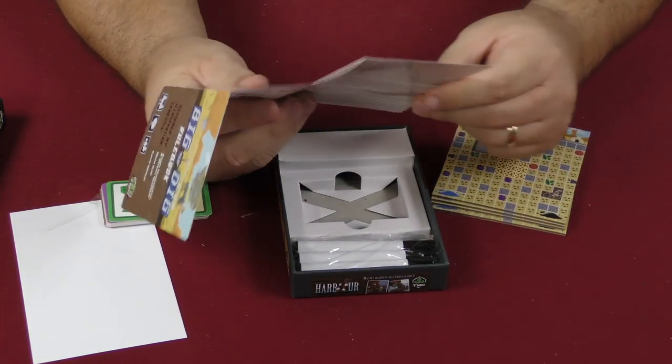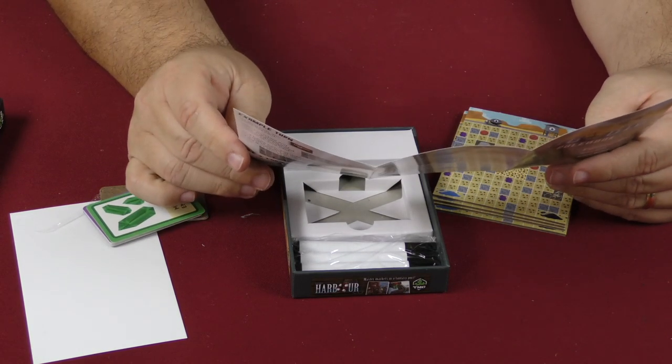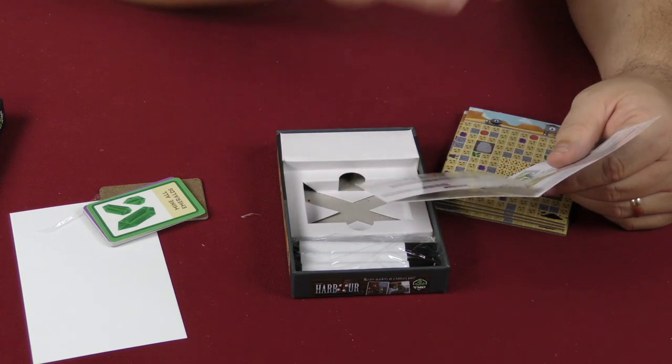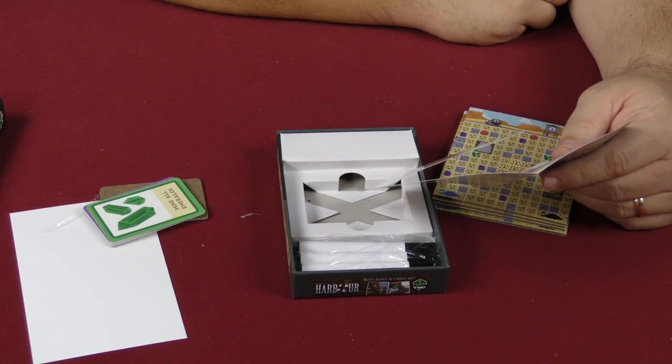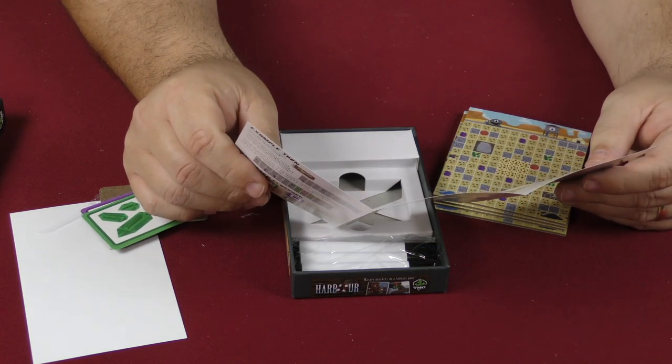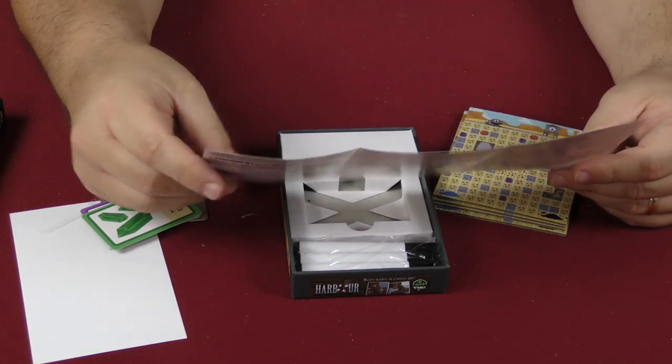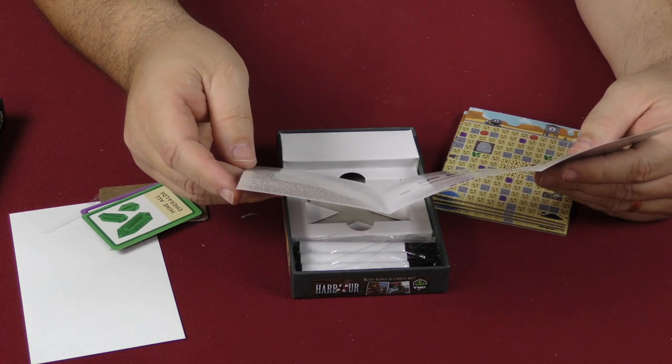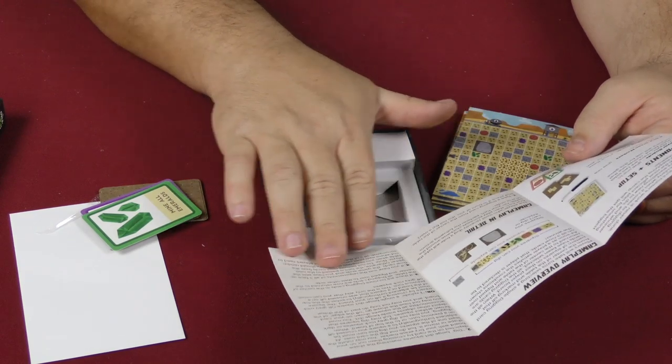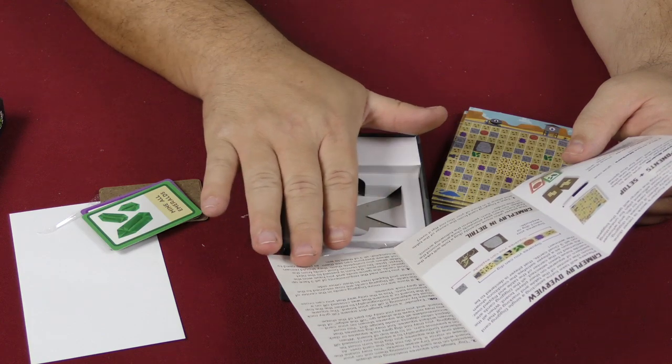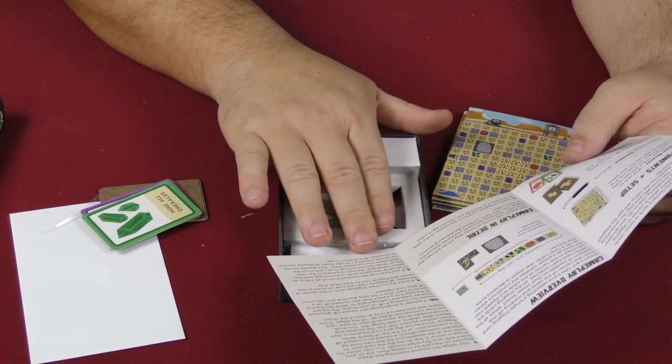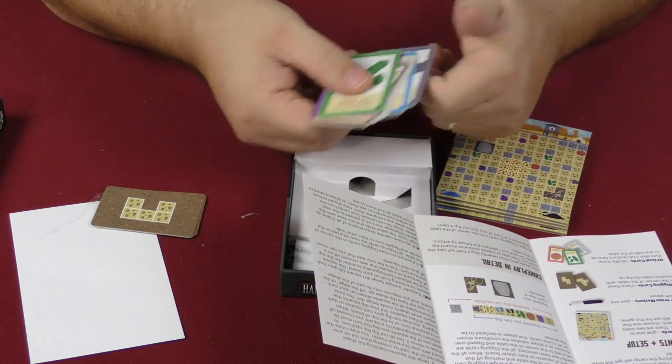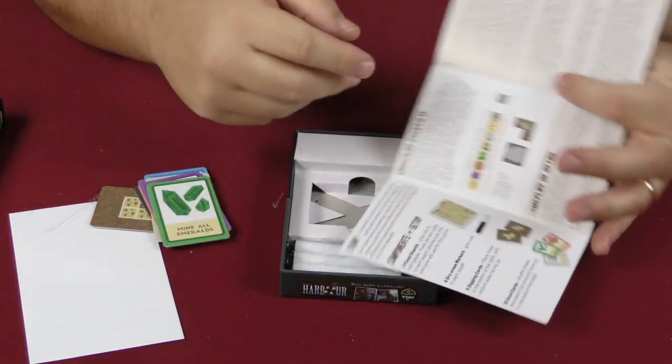The game will end when... let me find where it says that. I'm having trouble finding it. There it is: if you have met all the requirements of all three face-up goal cards, the game ends and you have won. Otherwise, the turn is passed to the next player. Do not remove goal cards from the table when you complete them—they should remain out where everyone sees. So you'll have three of these out on the table, and once you've completed all three, that's when the game ends.